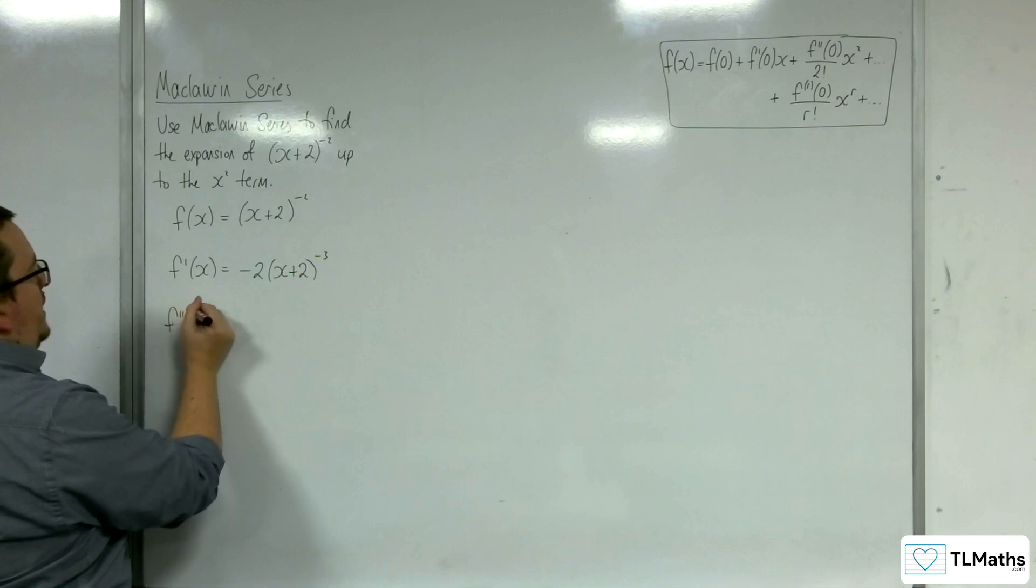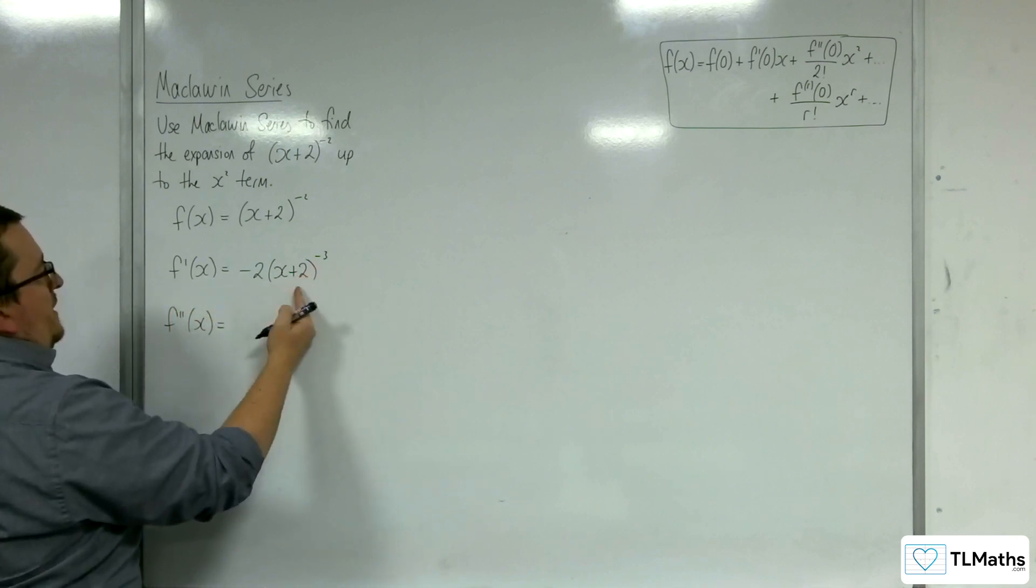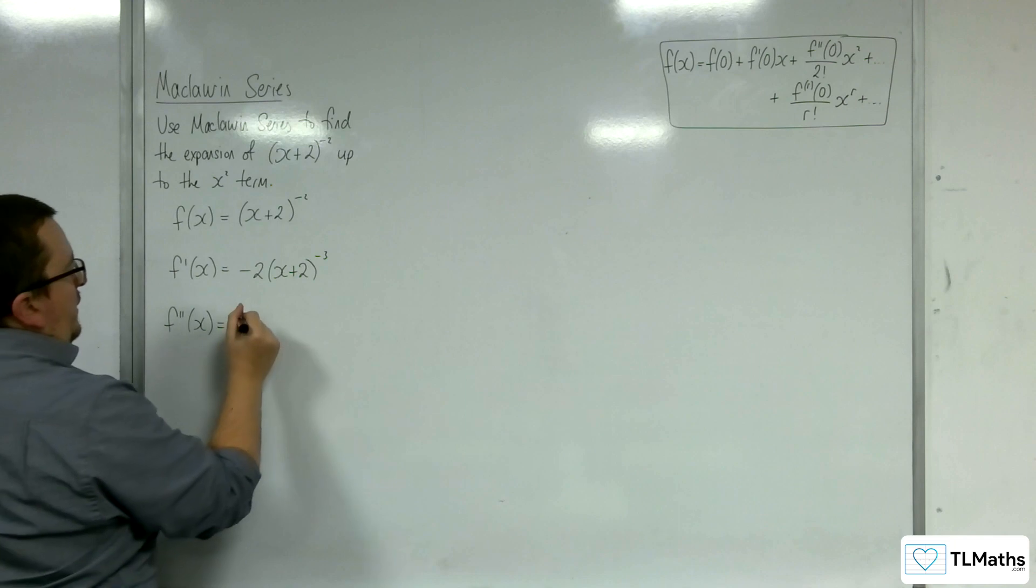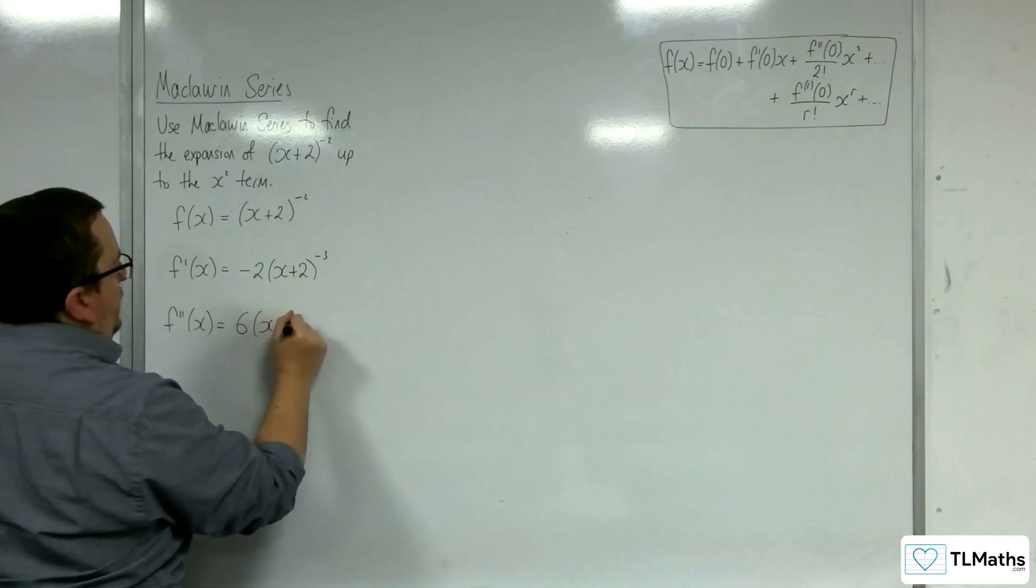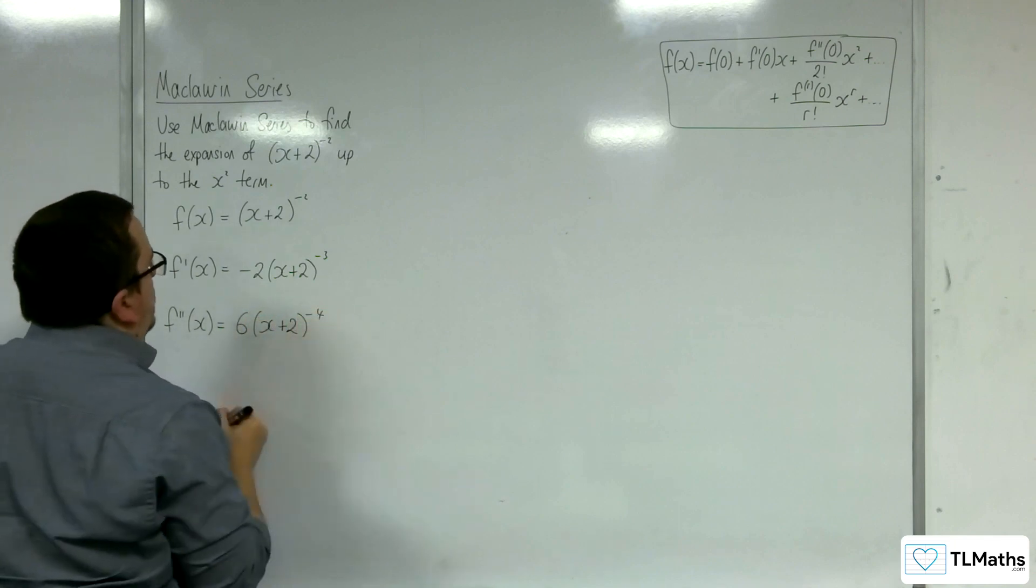And then the second derivative, the derivative of the inside is still 1, minus 3 I'll multiply with minus 2, so I'd have 6(x+2)^(-4).